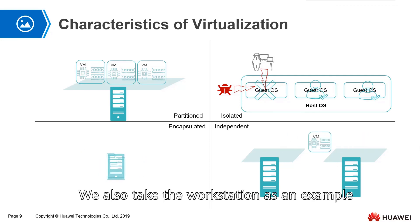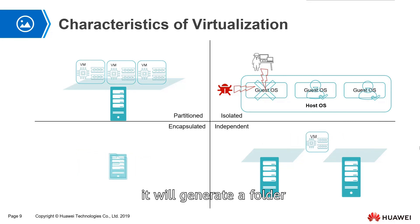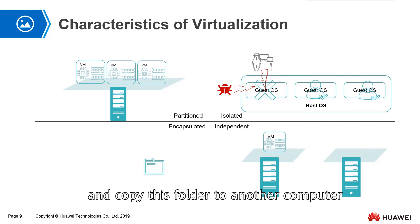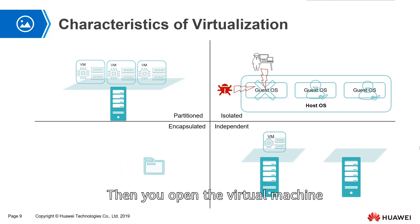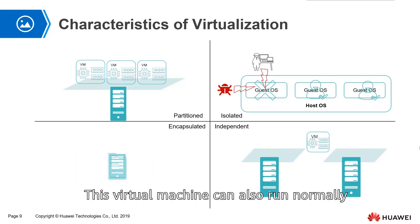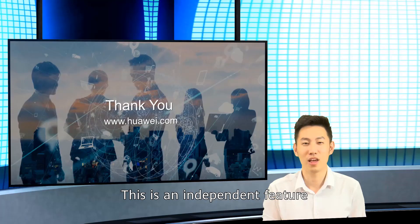Taking the workstation as an example of the independent feature: when you create a virtual machine, it generates a folder. If you copy this folder to another computer with a workstation installed, then open the virtual machine and point it to that folder, the virtual machine can also run normally. This is the independent feature.